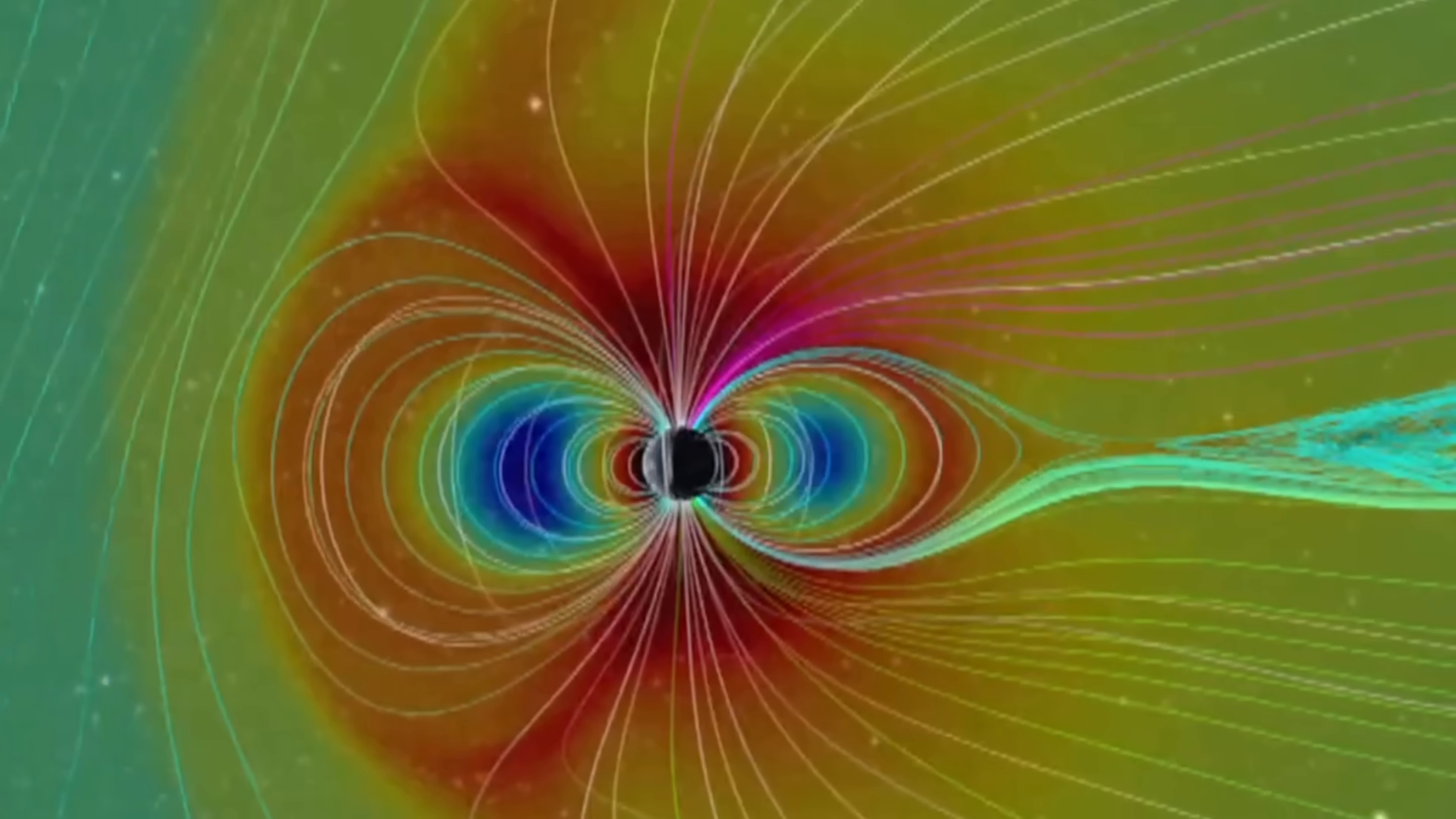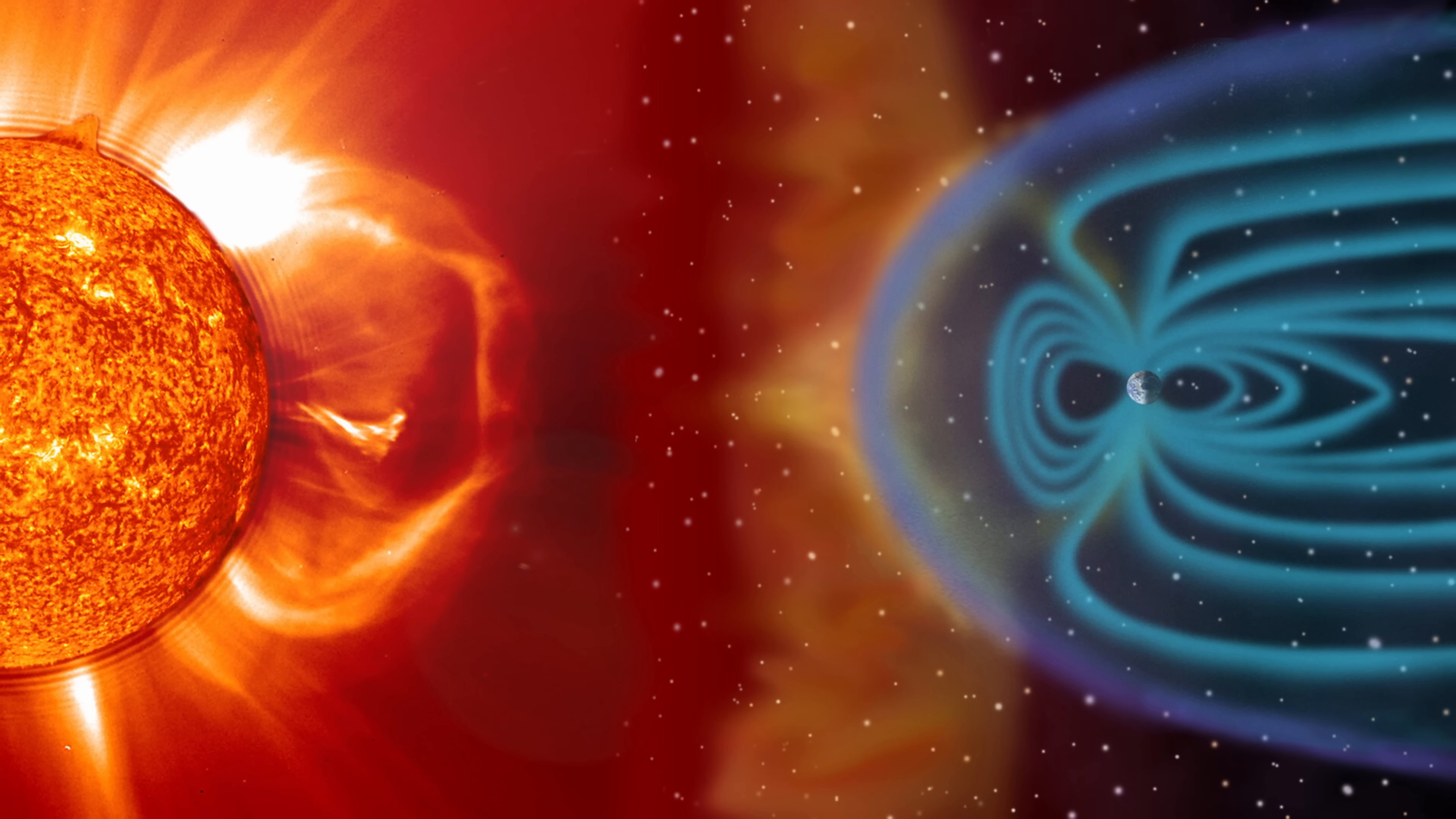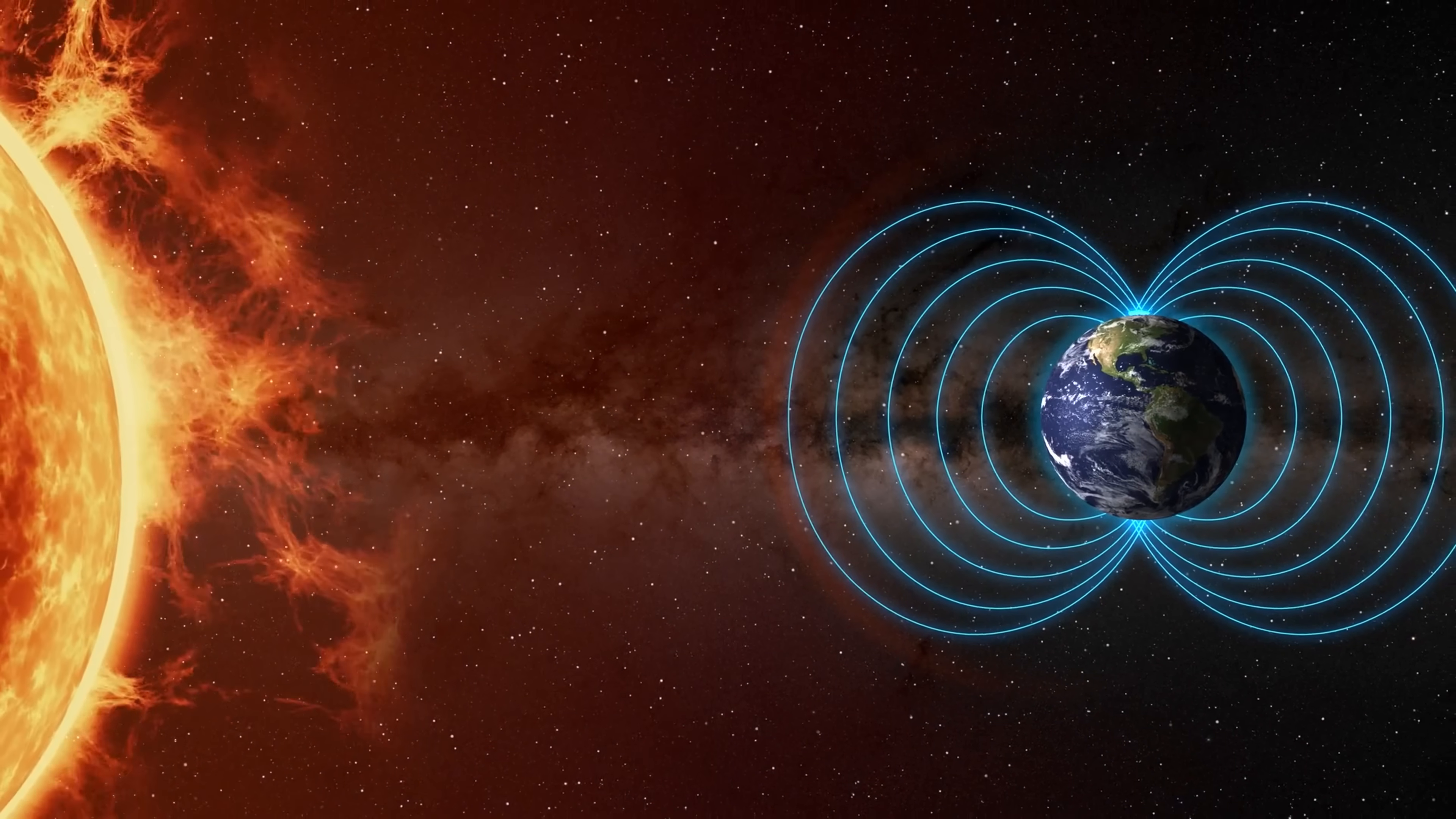The question is, how strong was this and how does it actually compare to historical values? In this case, the storm's intensity is usually measured using something referred to as DST or Disturbance Storm Time Index. Though the initial value for this was minus 412 nanotesla, it has now been confirmed to be approximately minus 518 nanotesla.